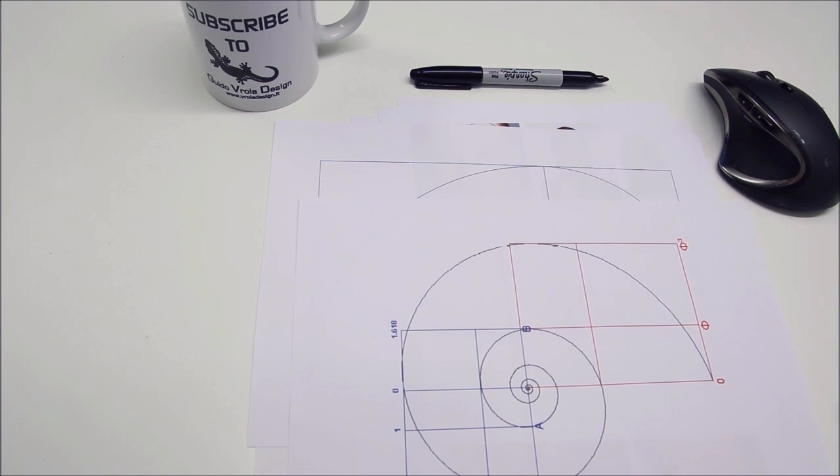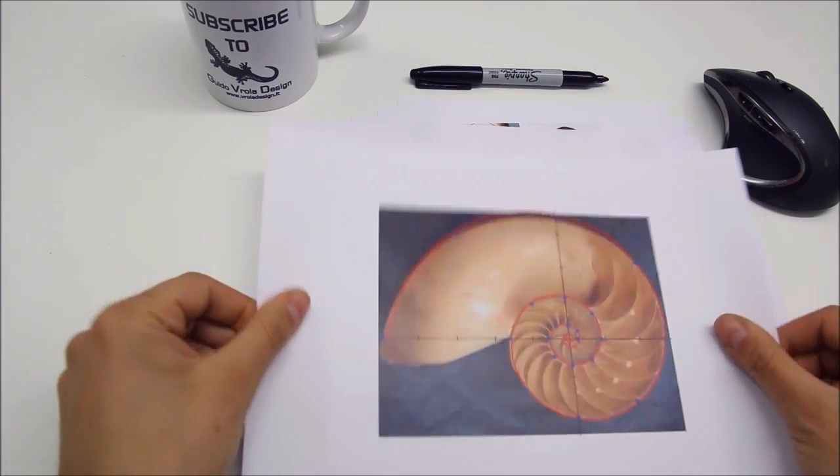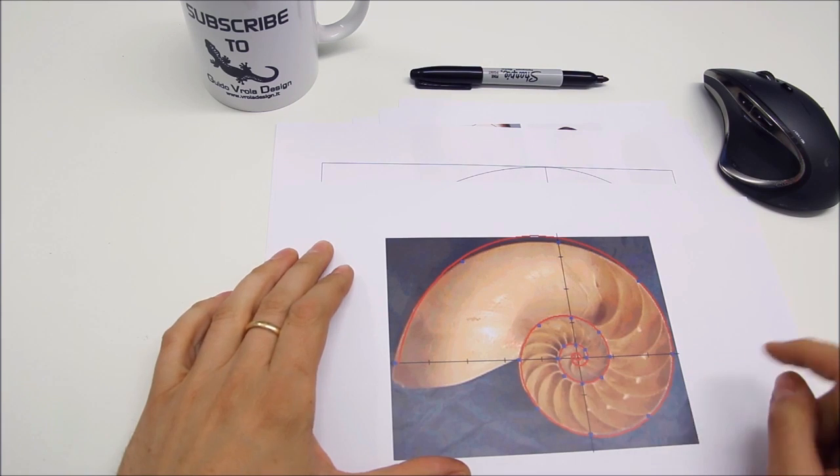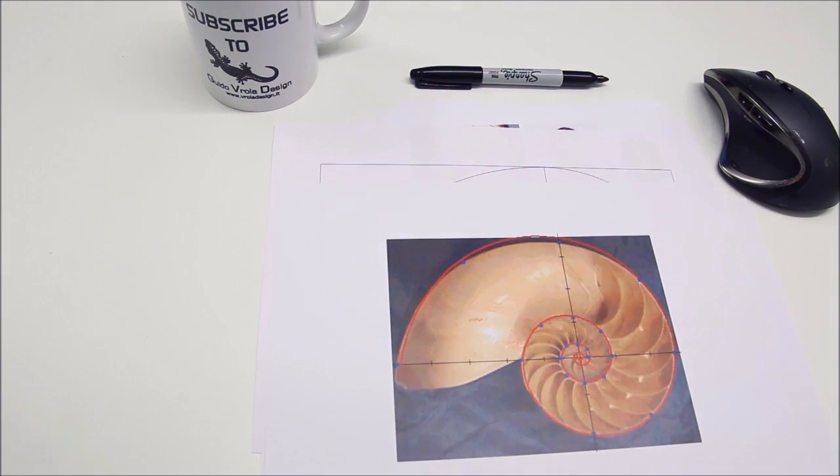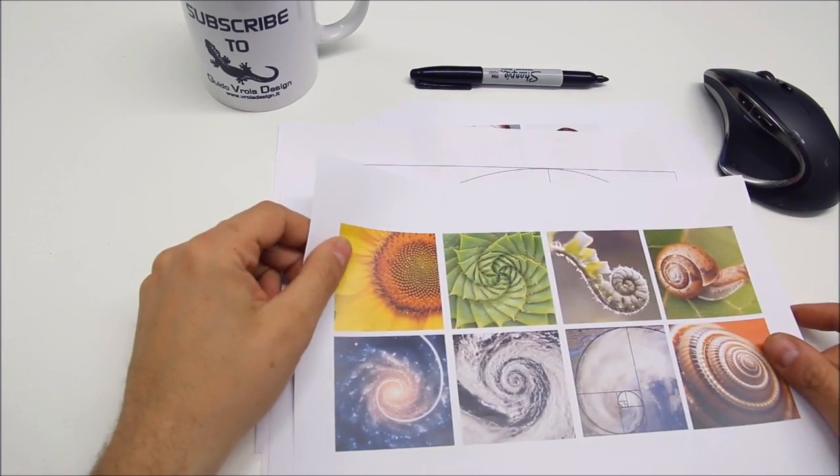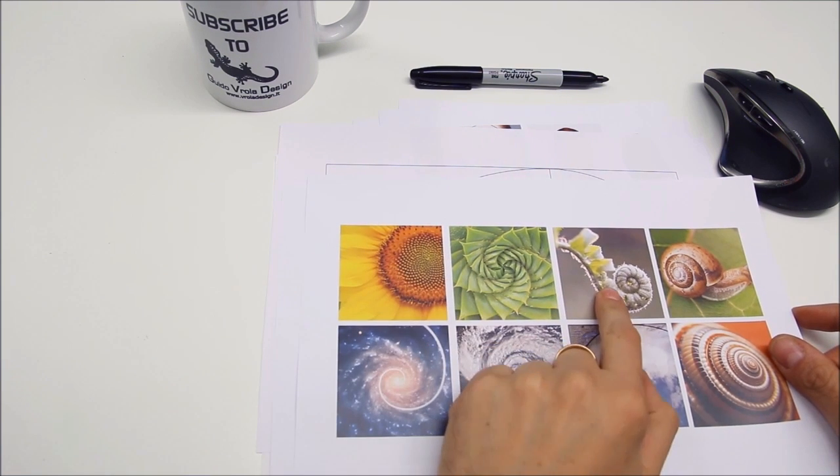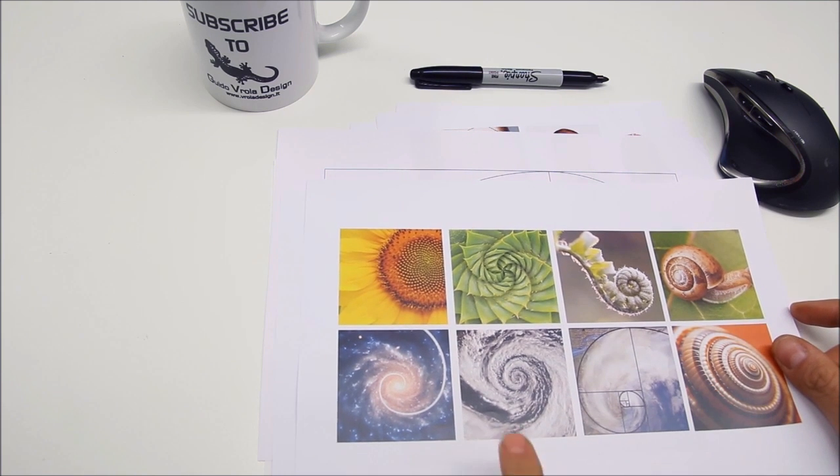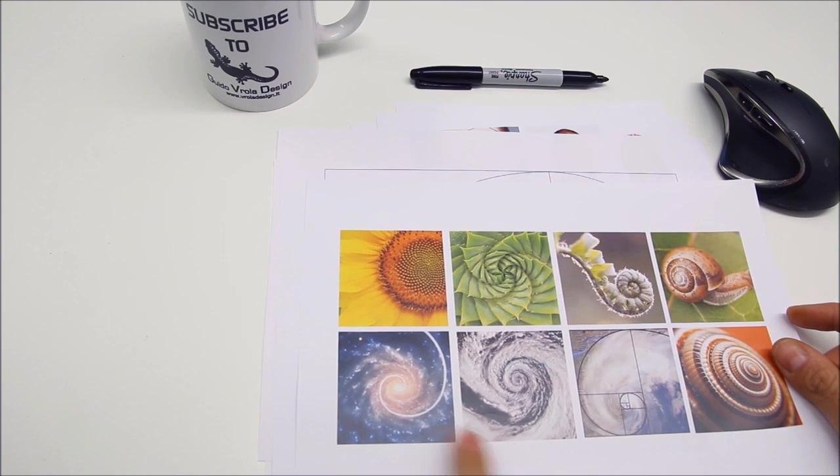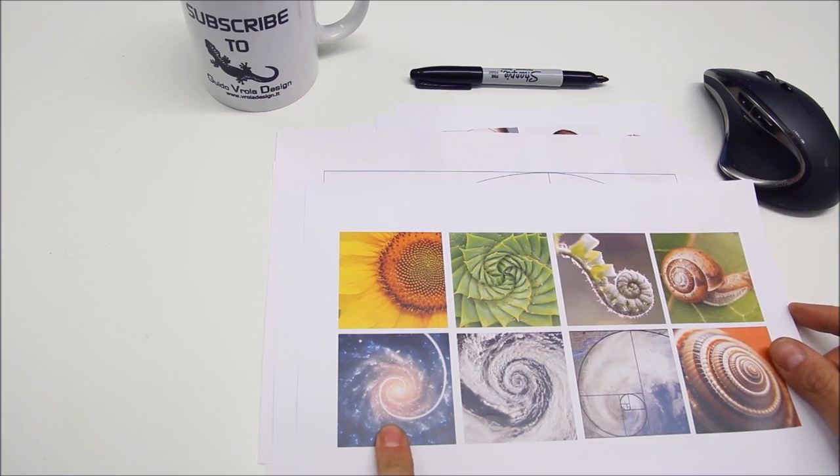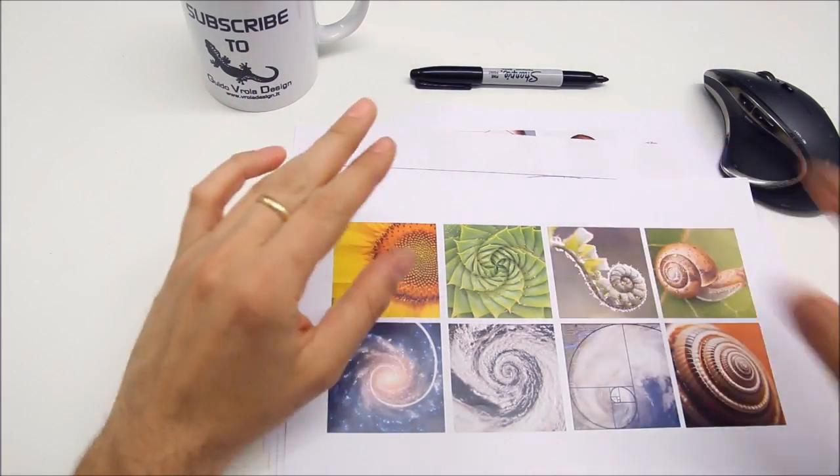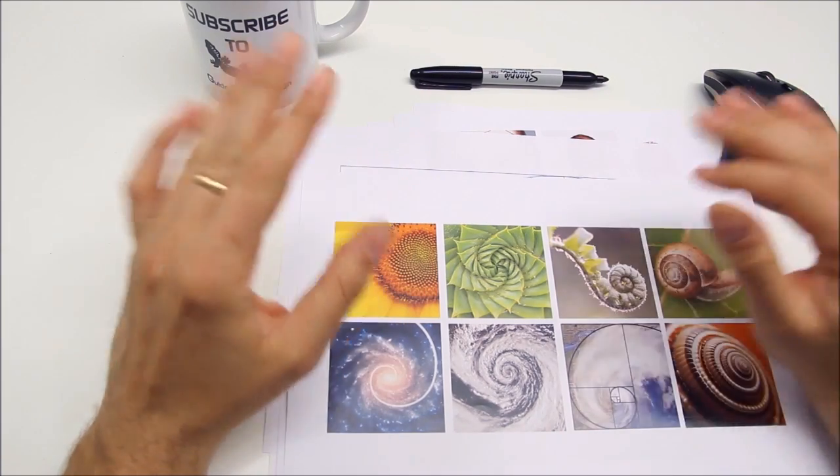Like in nautilus, for example, you can see it fits almost perfectly, but I can say many others, from the flowers to the leaf growing, to the shell of the snails, to the storms, to the galaxies. This is only a few examples but you can find many more around you.